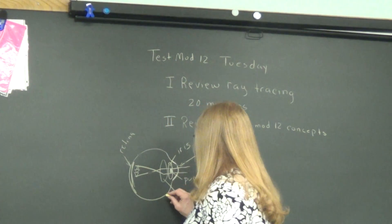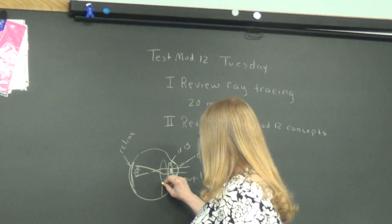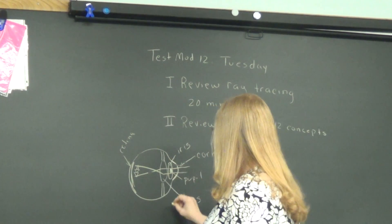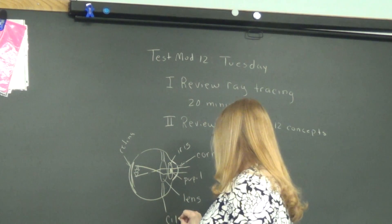The cool thing about our eye is there's these muscles that hold on to the lens. They're called ciliary muscles.